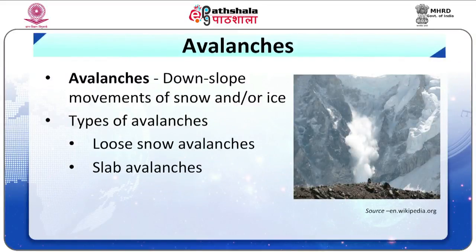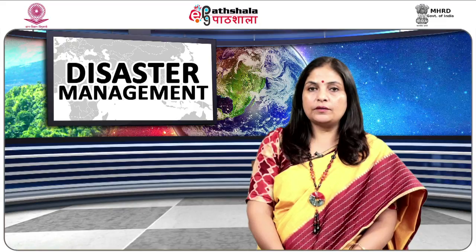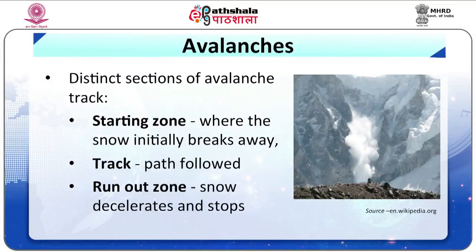There are two basic types of avalanches: loose snow avalanches and slab avalanches. These are further subdivided according to whether the snow involved is dry, damp, or wet; whether the snow slide originates in a surface layer or involves the whole snow cover; and whether the motion is on the ground, in the air, or mixed. Three distinct sections of an avalanche track can usually be identified: the starting zone where snow initially breaks away, the track or path followed, and the run-out zone where the snow decelerates and stops.